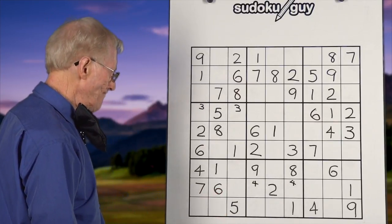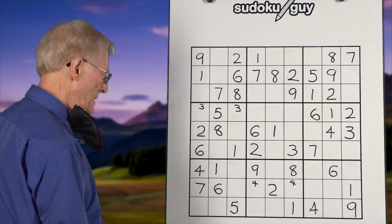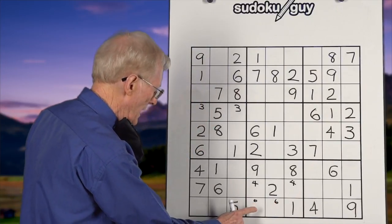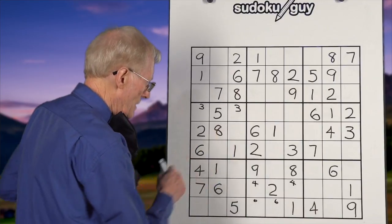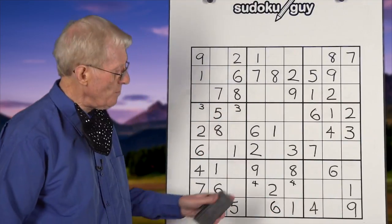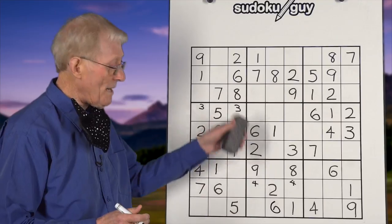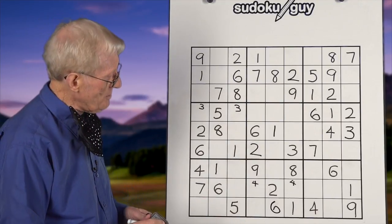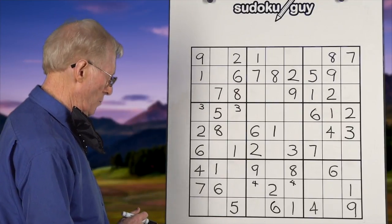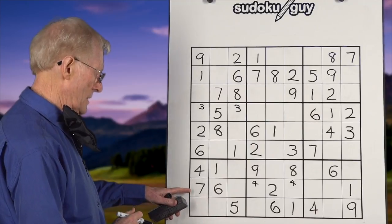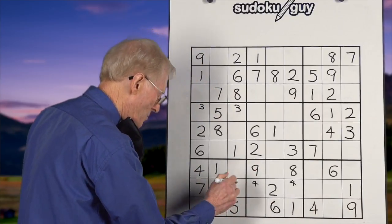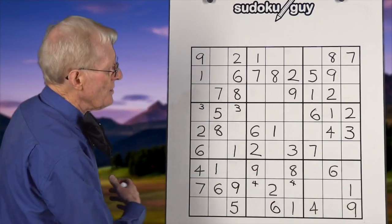For 5s: only one 5 in here. For 6s: we have two 6s. A 6 could go here or here, but there's a 6 up in this column, so we get rid of that option and go with this 6. After experience, you don't need little pencil marks — you just keep it in your head and put it straight in. For 7s: only one 7. For 8s: only one 8. For 9s: we have a bottom 9 and a top 9, so the 9 has to go in this spot. We've now completed TMB. Now we do LCR.